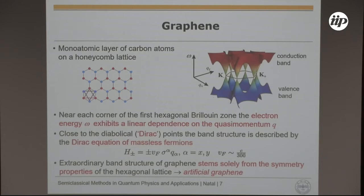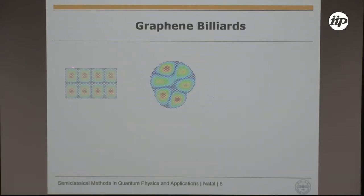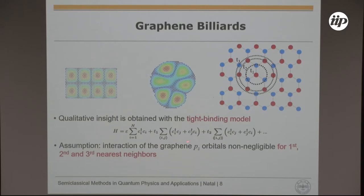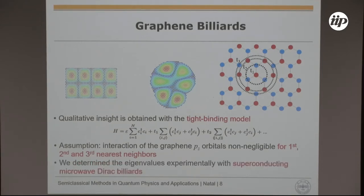This property is not solely restricted to graphene but is valid in any system with this symmetry, so there are many examples where artificial graphene has been constructed. We also performed experiments to realise artificial graphene. A graphene billiard is a finite sheet of the hexagonal lattice. To describe graphene billiards numerically we use a tight-binding model — with first, second and third nearest-neighbor coupling — which worked well and gave good agreement with our experimental results.